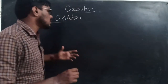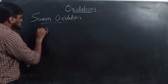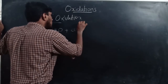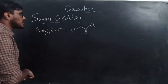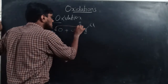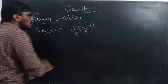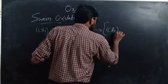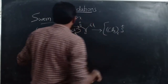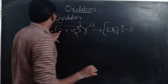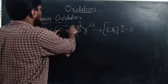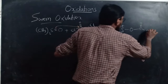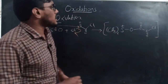Now let's check the mechanism of Swern oxidation. The first step is the activation of dimethyl sulfoxide (DMSO) using oxalyl chloride. This is oxalyl chloride: O=C–C=O with two Cl groups. In the first step, the oxygen of DMSO attacks this carbon, the Cl⁻ leaves the molecule, and an intermediate is formed: (CH₃)₂S⁺ bonded to O, then C=O and C=O and Cl — a transient intermediate state.